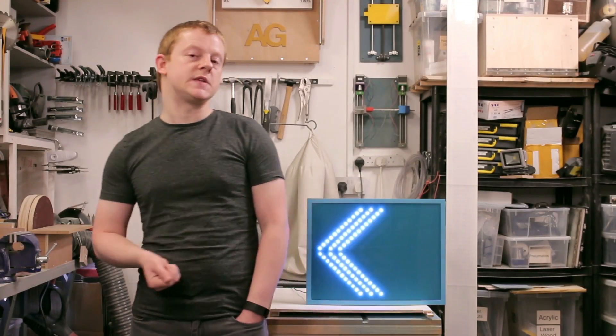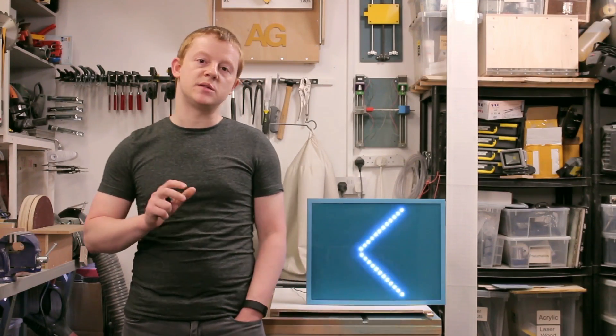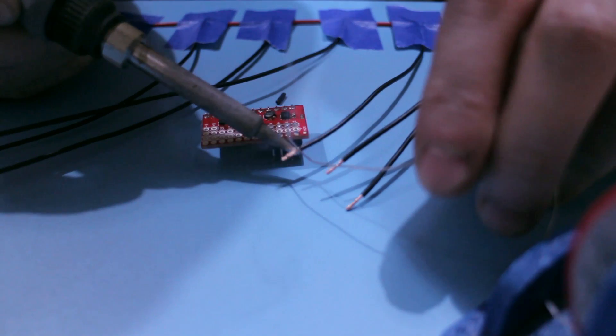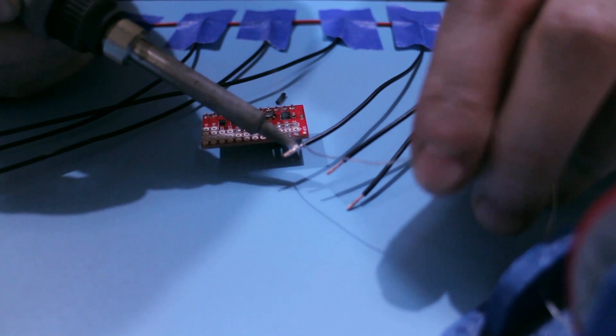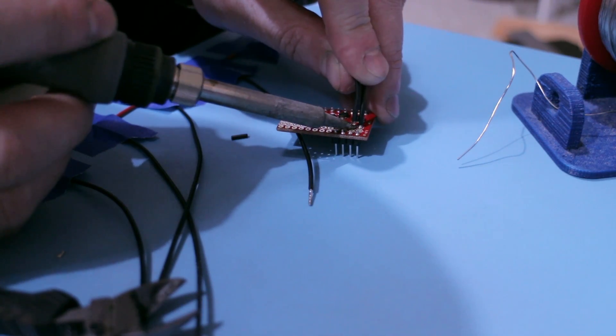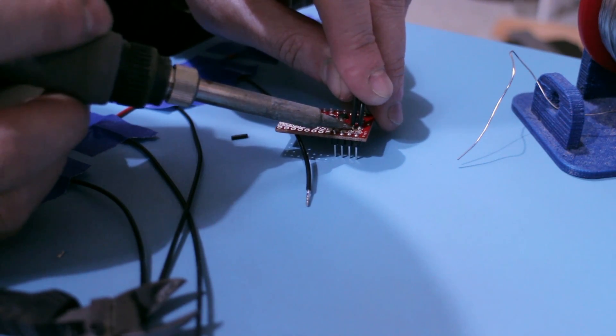Each of the LED strips is connected to a mini FET board from SparkFun. This is a small companion board for the Arduino Pro Mini that's designed to control eight FETs for eight outputs such as this.